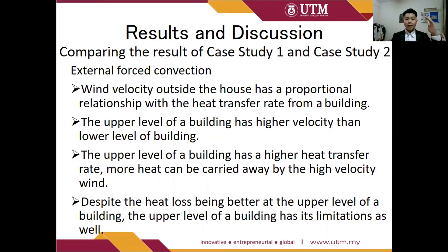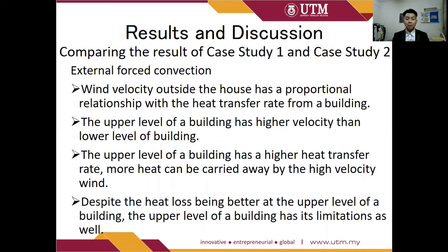Comparing case study 1 and case study 2 in terms of external forced convection: wind velocity outside a house has a proportional relationship with the heat transfer rate from a building. As agreed, the upper level of a building has higher velocity than the lower level, therefore the upper level has a higher heat transfer rate and more heat can be carried away. Despite better heat loss at the upper level, the upper level also has limitations — heat conduction through the roof into the building during the day is more significant at the upper level, resulting in the upper level receiving more heat compared to the lower level.